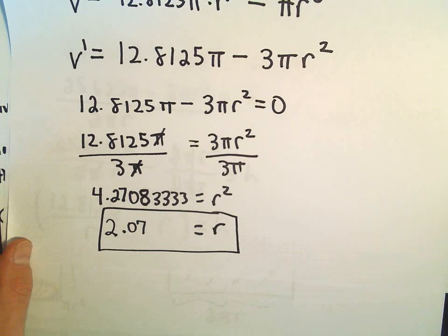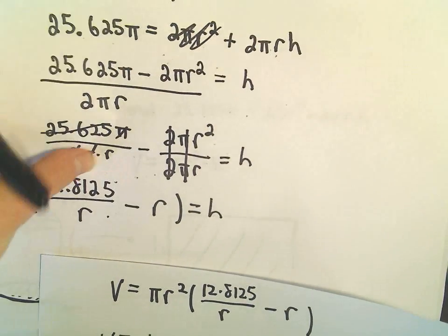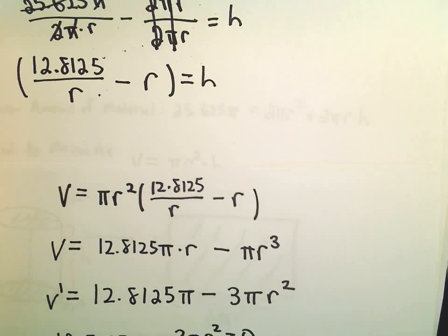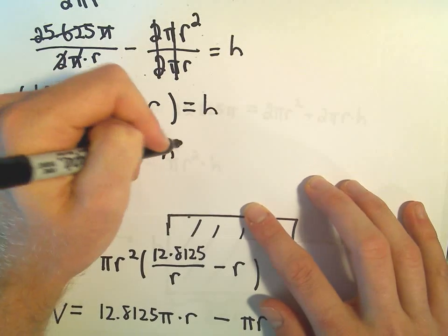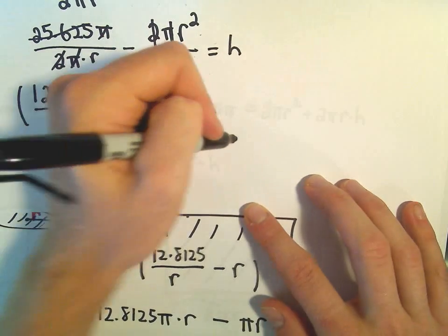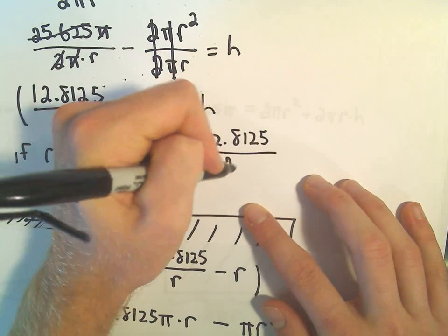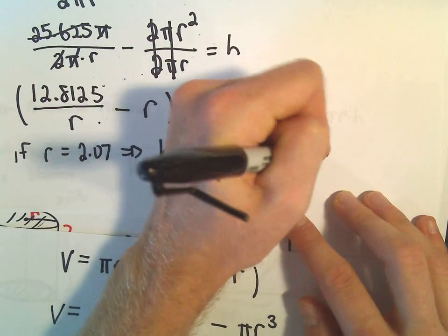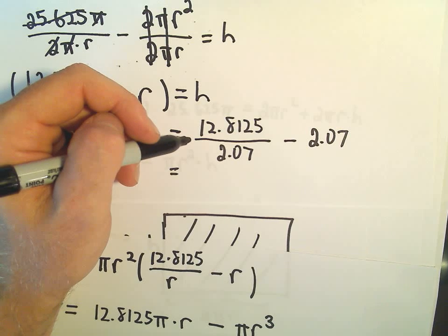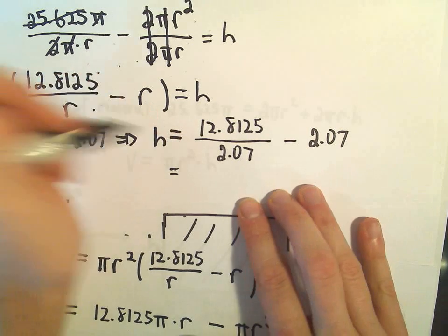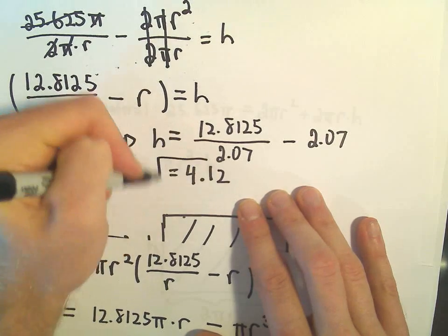Now that we know the radius, all we're going to have to do is just go back and plug that into our original equation we had. So here was our value to figure out H. So now I'm just going to plug in our R value. So if R equals 2.07, that's what we just found. That means our height would be, well, 12.8125 all divided by 2.07 minus 2.07. So let's see, 12.8125 divided by 2.07 minus 2.07.